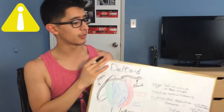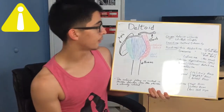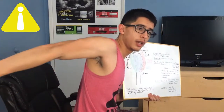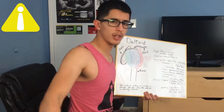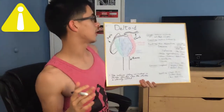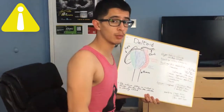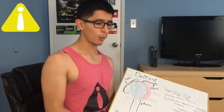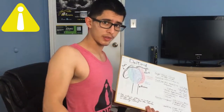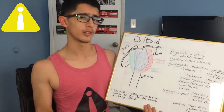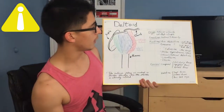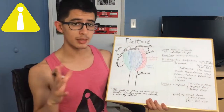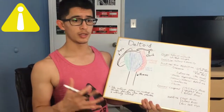Next we have transverse extension, mostly done through the posterior head. This is similar to a lat pulldown movement where your arm is up and it brings it back. Next is shoulder hyperextension, which is when you have your arm behind you and raise it up. You can see this work through shrugs where you bend your arms a little bit — this gets a little rear delt activation if you do shrugs with a slight bend in the elbow.